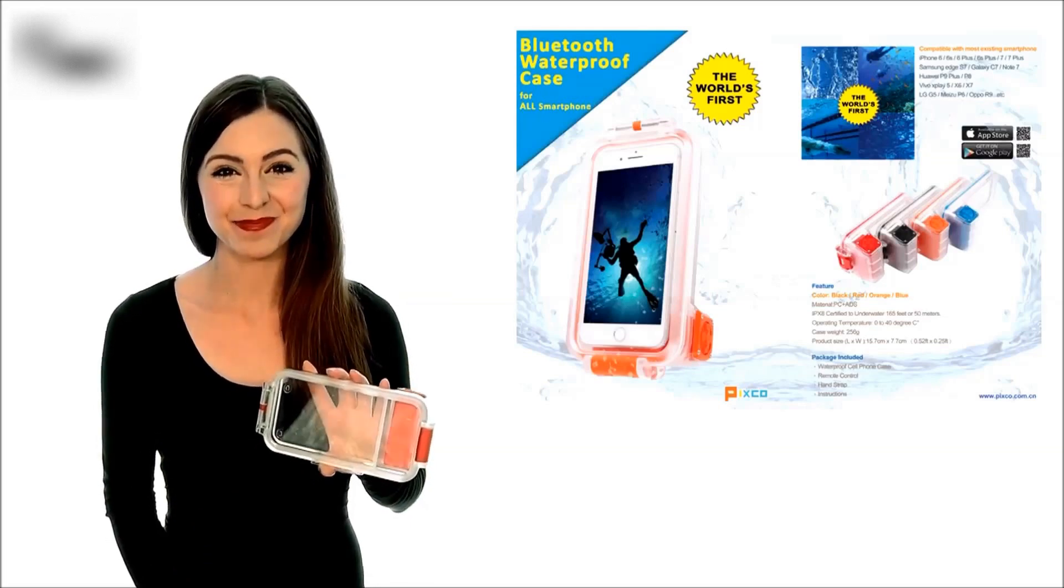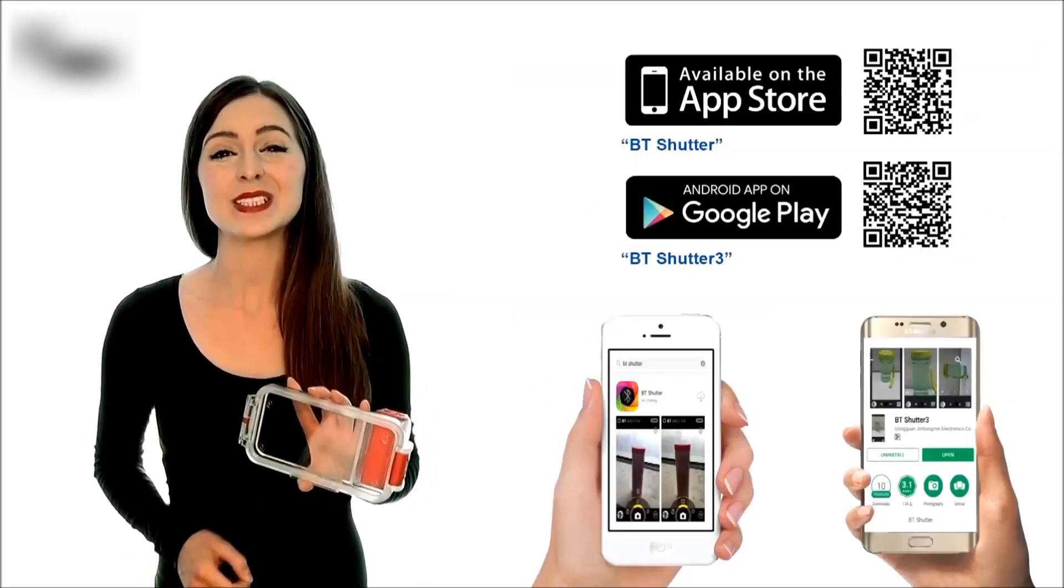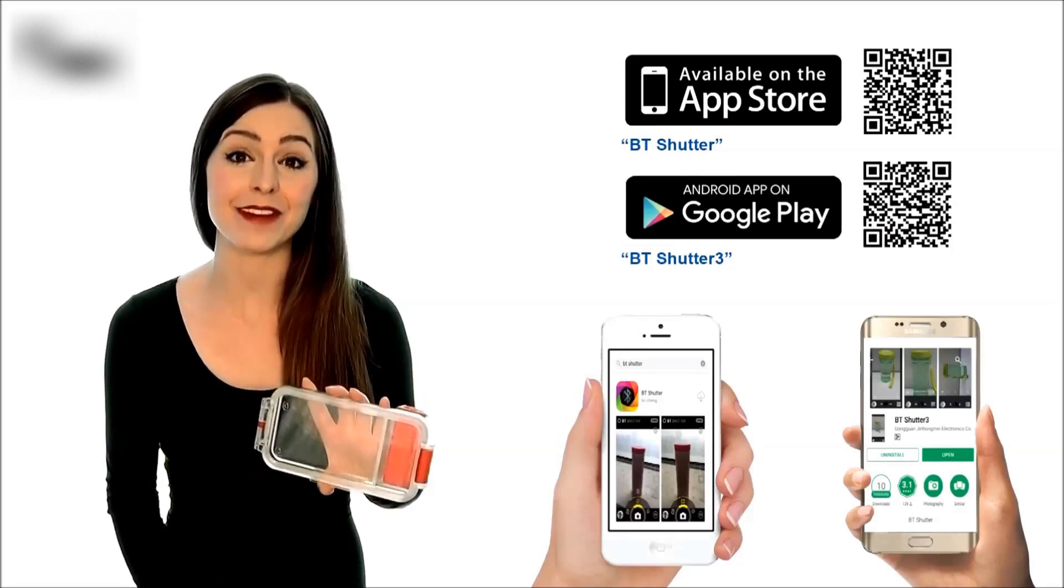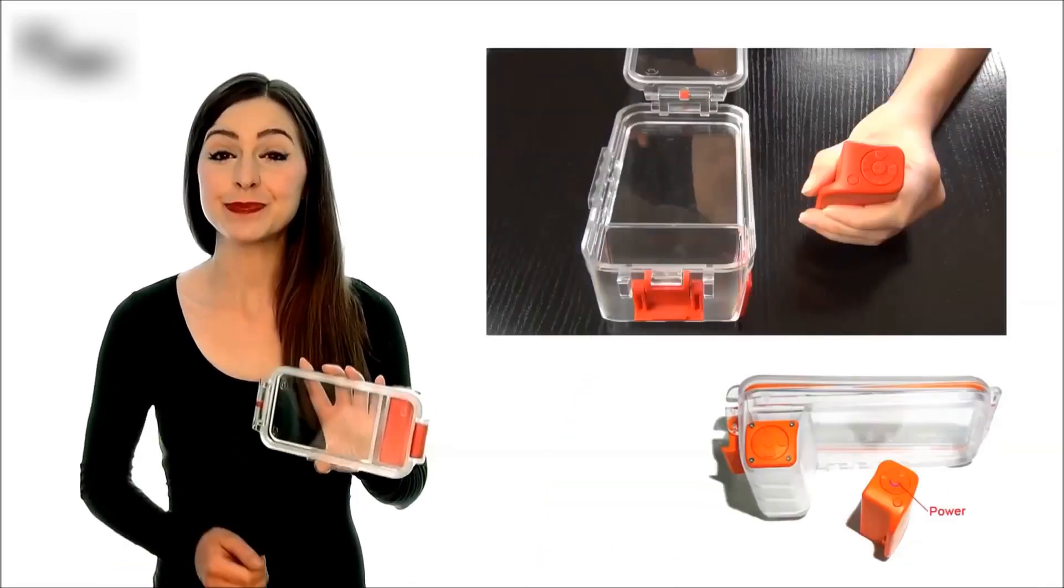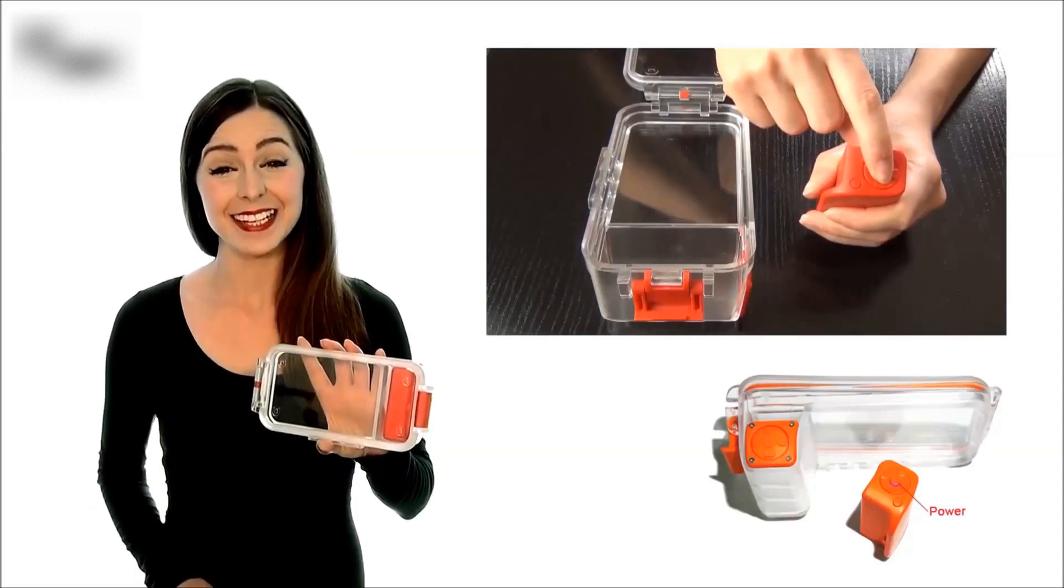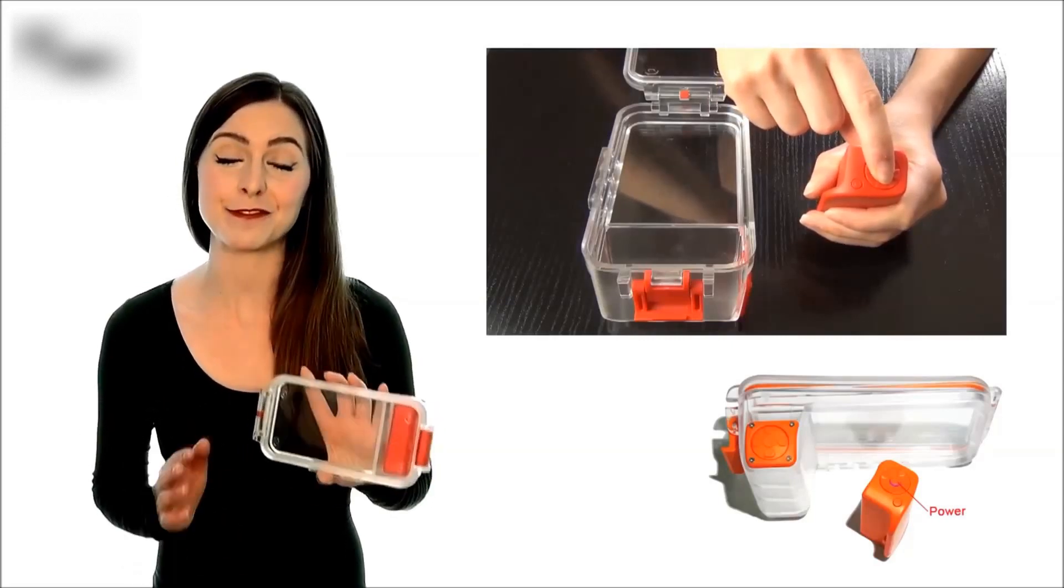It is so simple to get started. One, download and install the app BT Shutter for iOS or BT Shutter 3 for Android. Two, turn your Bluetooth on your smartphone and on the PIXCO case by pressing and holding the power button for five seconds.